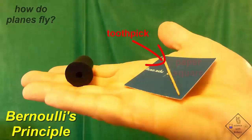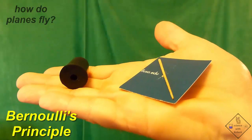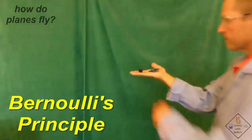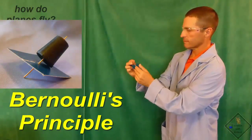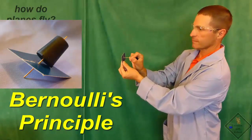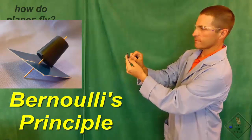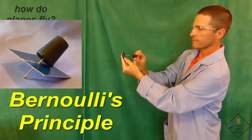Dr. Smith has a toothpick, paper square, and a rubber tube. The toothpick is placed through the paper, then through the rubber tube.